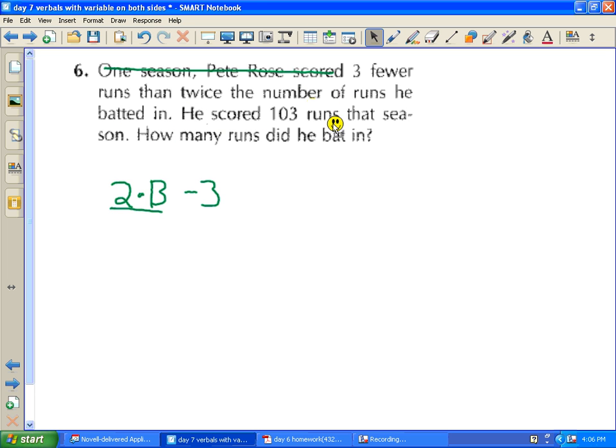He scored 103 runs that season. So that means it equals 103 runs. How do I know that it's equals? Well, because up here it says Pete Rose scored and down here it says he scored 103 runs. Pete Rose scored three fewer. So this is an implied equation.